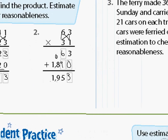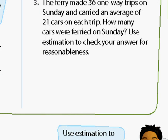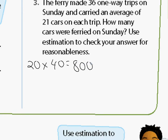I'm going to do a quick word problem. The ferry made 36 one-way trips on Sunday and carried an average of 21 cars on each trip. How many cars were ferried on Sunday? Before we do the problem, we should round these numbers and estimate. Rounding gives us 20 times 40. We know 2 times 4 is 8, and with two zeros in the factors, that's about 800 cars.